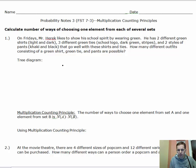Let's take a look at this first example. It says on Fridays I like to show my school spirit by wearing green. I have two different green shirts, light green and dark green, three different styles of green ties with the school logo, dark green, and one with stripes, and I also have two styles of pants, khaki and black, that go well with my outfit. My question is how many different outfits consisting of a green shirt, green tie, and pants are possible.